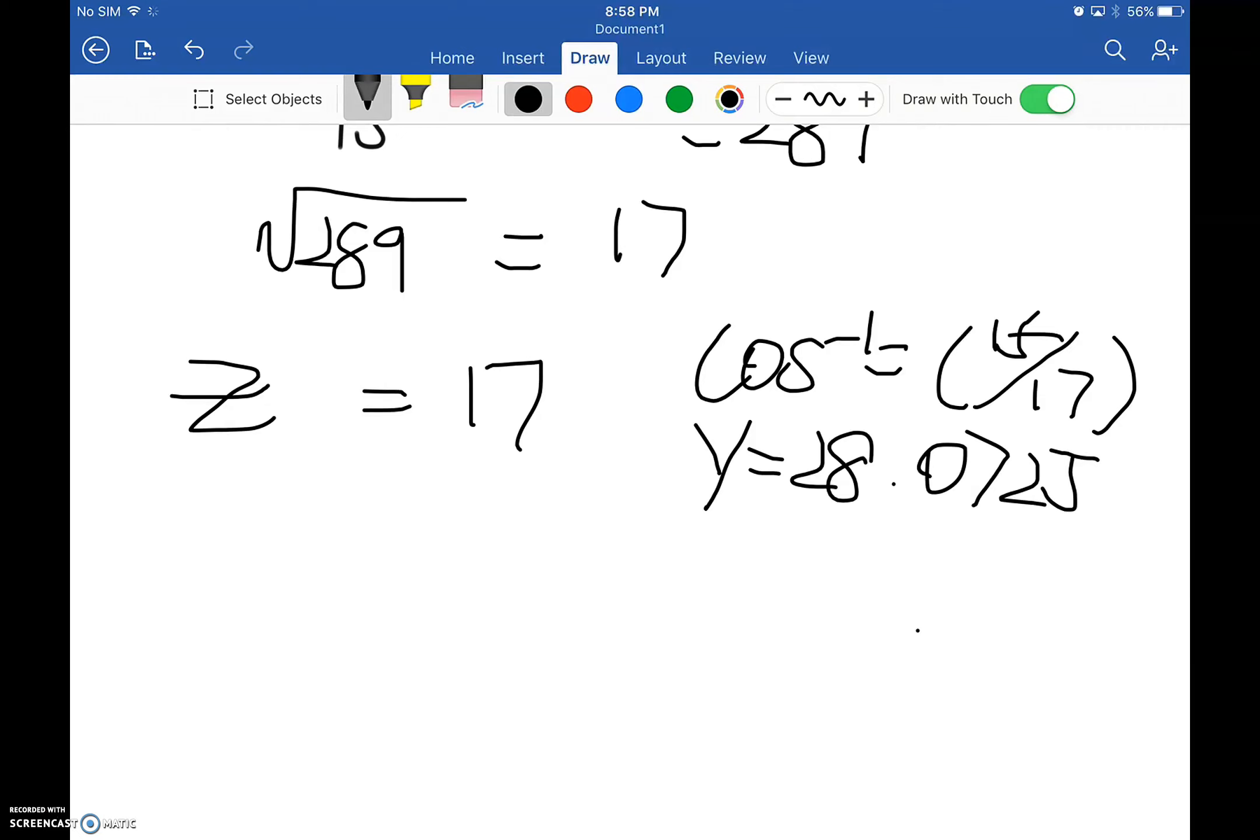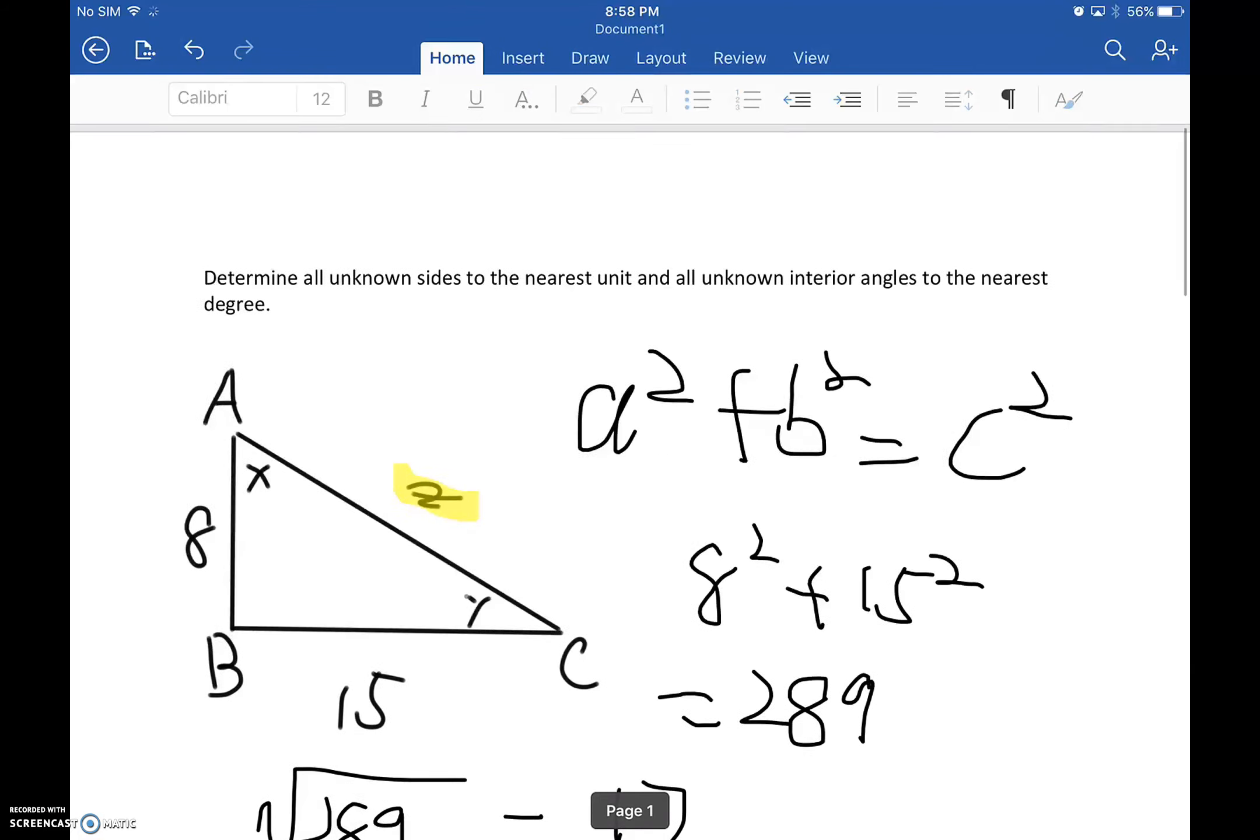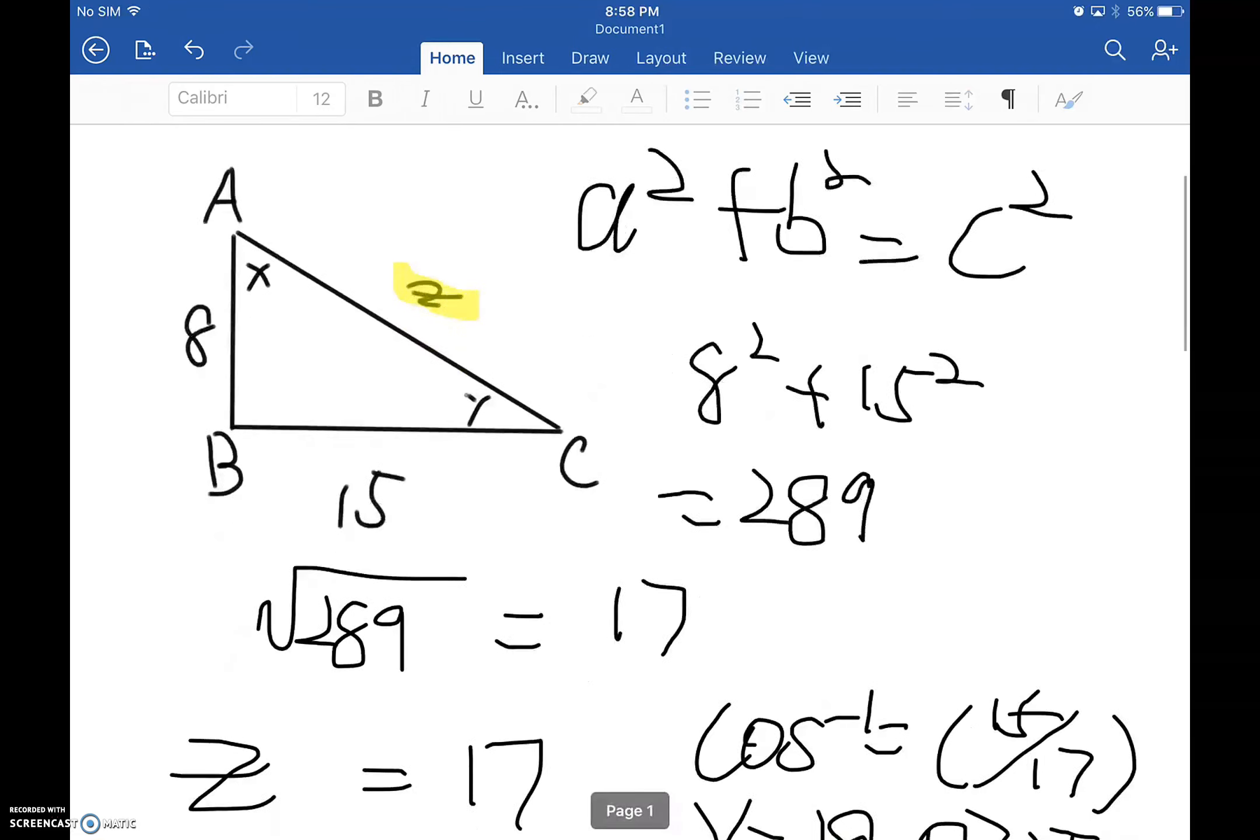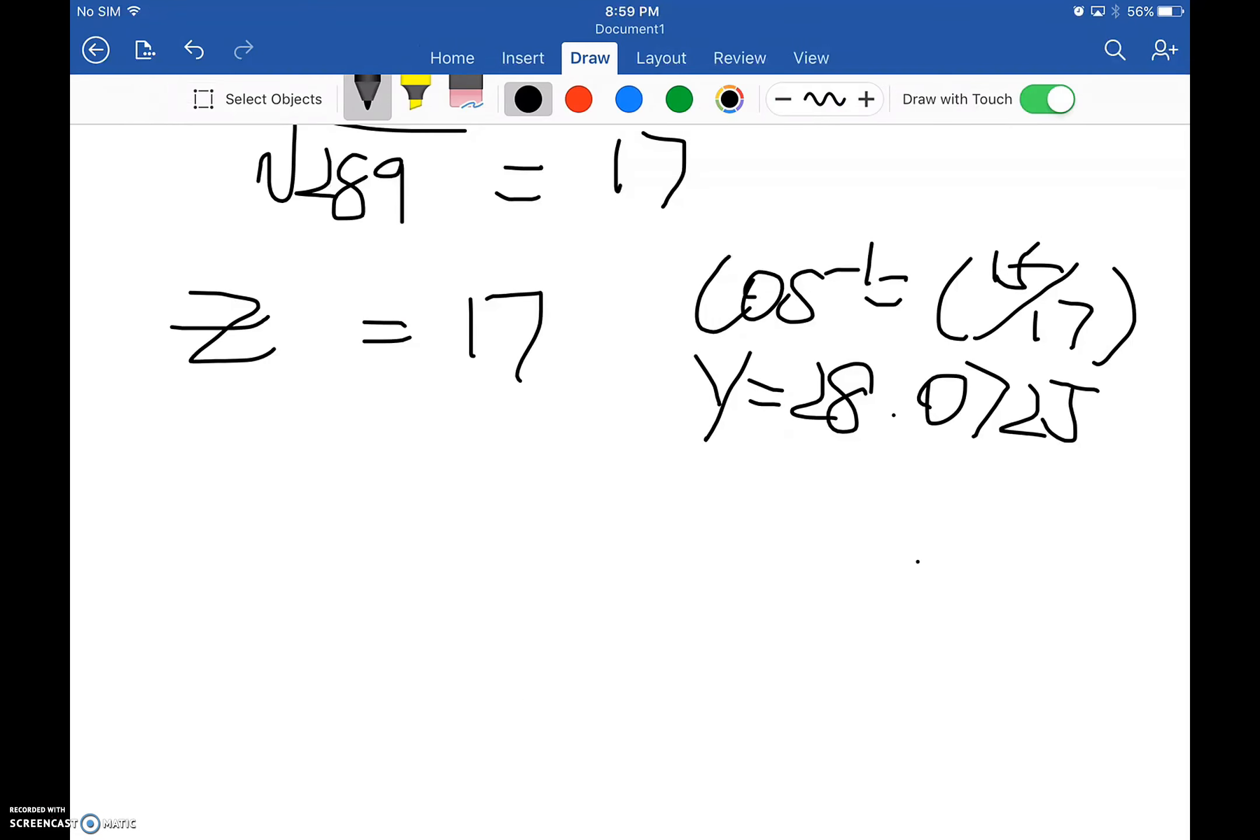So, right now, what we need to do, because we already know the angle B, which is the 90 degrees. It is a right triangle, and angle B is 90 degrees. So, what we need to do is, we use 180, minus angle y, which is 28.0725, and minus 90. And we get the x is, 61.92751306.